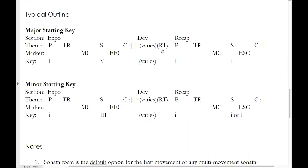The development will usually end with a retransition, and that retransition will usually end with a half cadence, after which point we get the recapitulation. The recap goes through the same cycle of themes introduced in the exposition: primary theme, transition, secondary theme, and closing theme. Once again, we'll have a medial caesura separating the first half of the recap from the second half. One thing that's different from the exposition is that the second half of the recap has now been transposed to be in tonic.